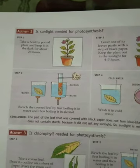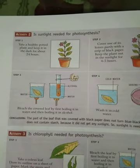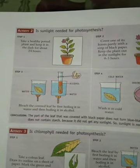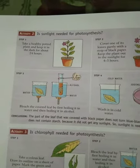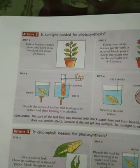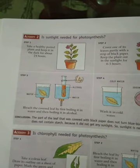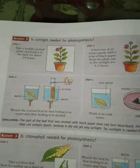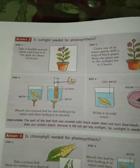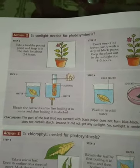Step 1: Take a healthy potted plant and keep it in the dark for about 24 hours. Why are we doing that? Because in the dark, no sunlight is available. If we keep it for 24 hours — one whole day and one whole night — we are quite sure that no photosynthesis reaction is occurring there. If sunlight is necessary for photosynthesis, that is why we keep the plant for 24 hours, not just 1-2 hours.